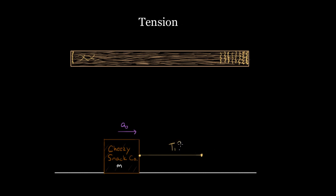A lot of problems will say 'assuming the rope is massless.' If the rope were not massless — imagine it's a very heavy, thick rope — then the fibers at one end would have to pull not only the box but all the rope in between. The fibers closer to the box would have to pull less rope. So the tension at the pulling end would be greater, and it would get smaller and smaller toward the box end. You'd have a tension gradient — a varying amount of tension throughout the rope. That's complicated.